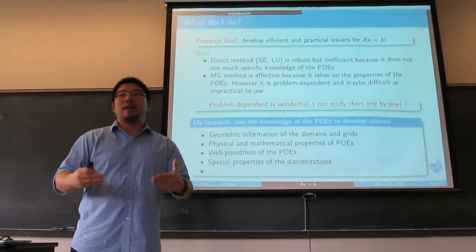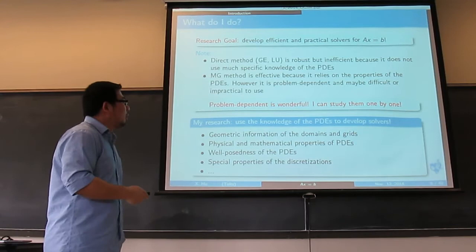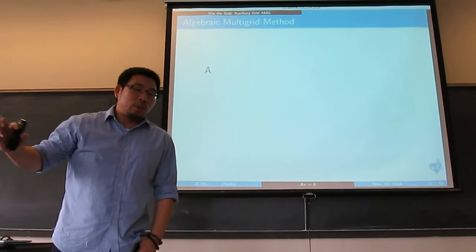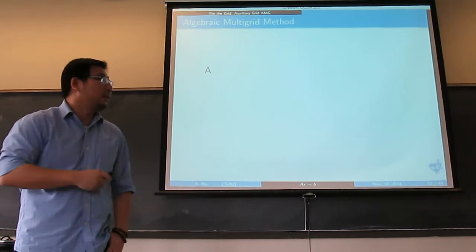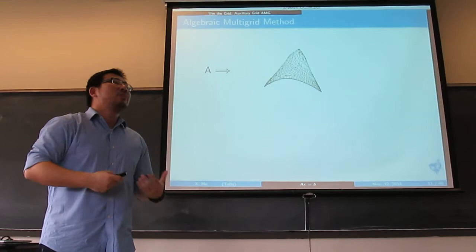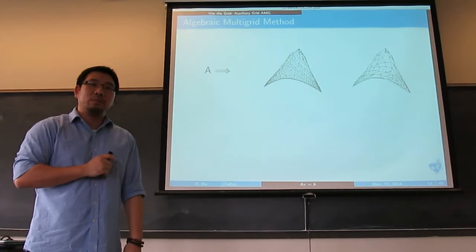I'll give a few examples of how we use different information to develop a solver. First is using the grid. There is algebraic multigrid (AMG), where people do not use different levels of geometric grid — they only look at the matrix A. The matrix A gives you a graph, and the AMG method says: I can coarsen the graph, and do multigrid on these graphs. That's the basic idea for AMG.